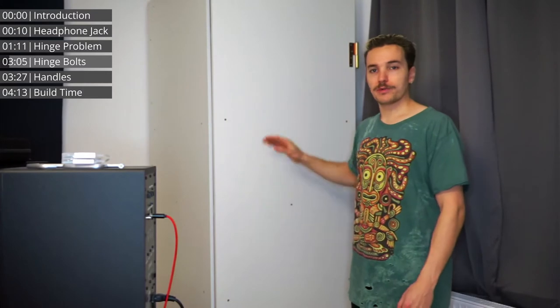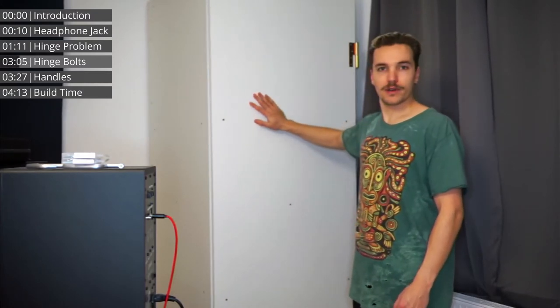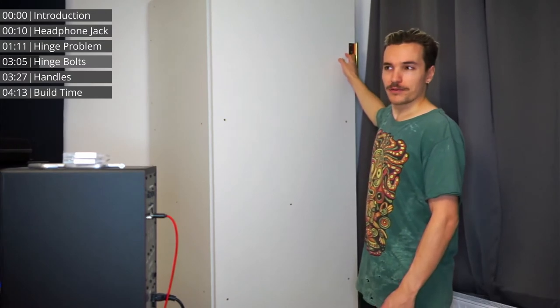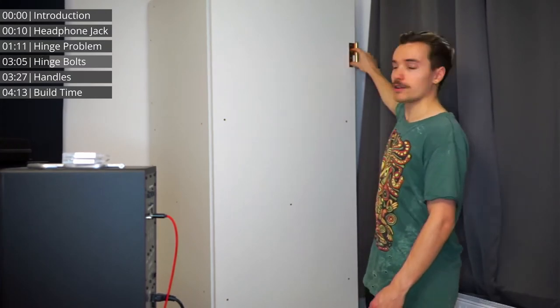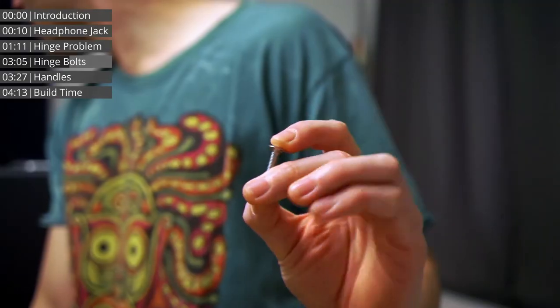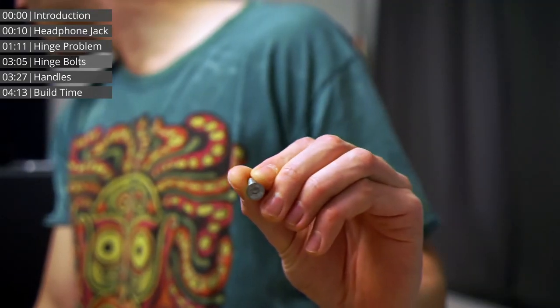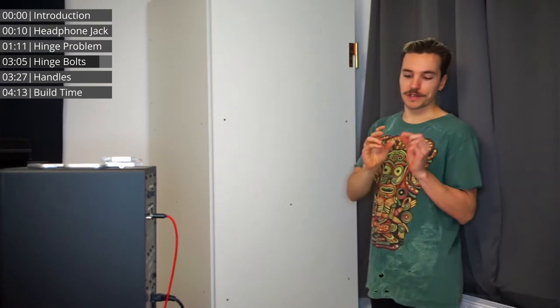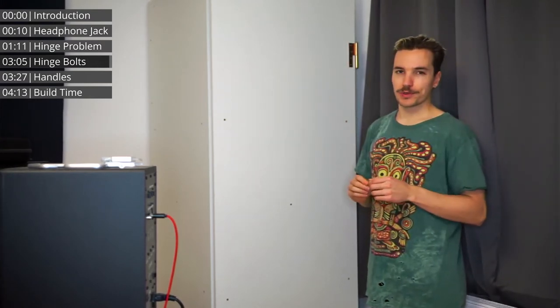Now the third problem that I had was that the door isn't closing the whole way it's getting stuck somewhere in the corner here and my first thought is that the bolts holding the hinges in are slightly too long. So something else that I bought. Slightly shorter bolts. So basically I need to take the door off take all these bolts out and individually replace them with a slightly shorter bolt which shouldn't be too bad.